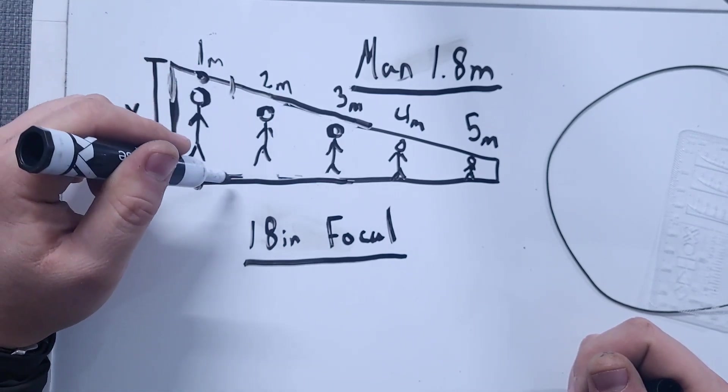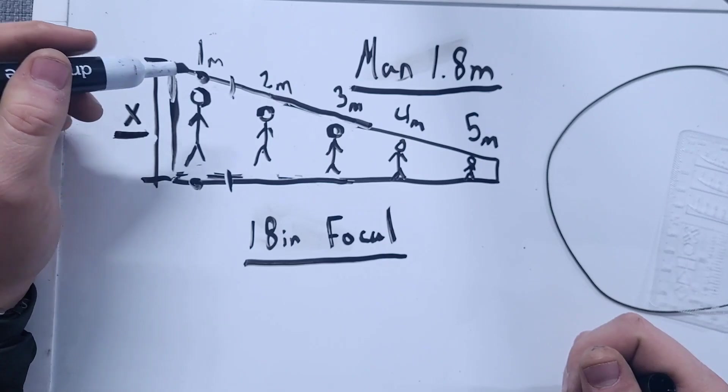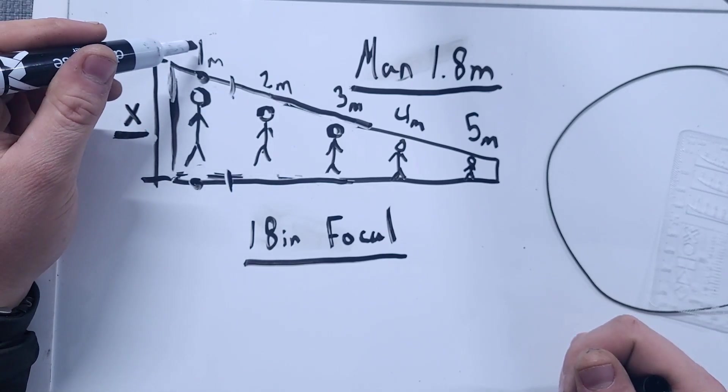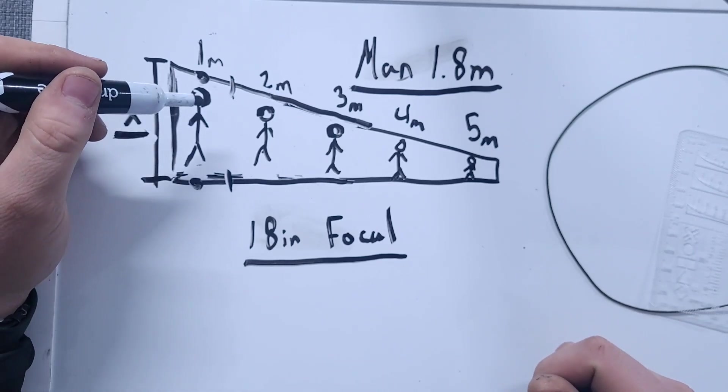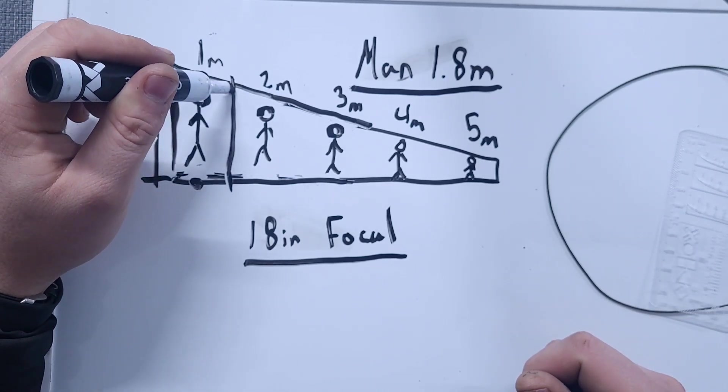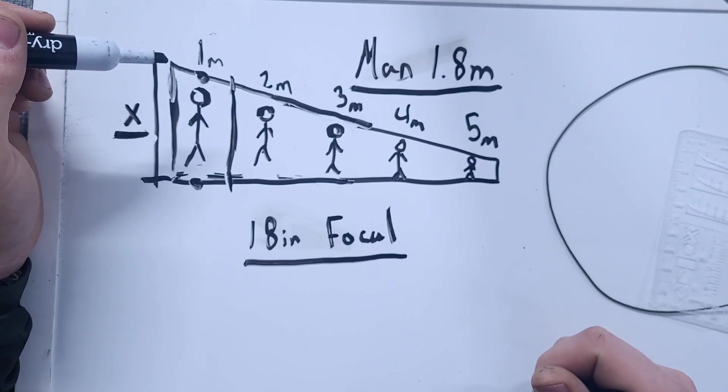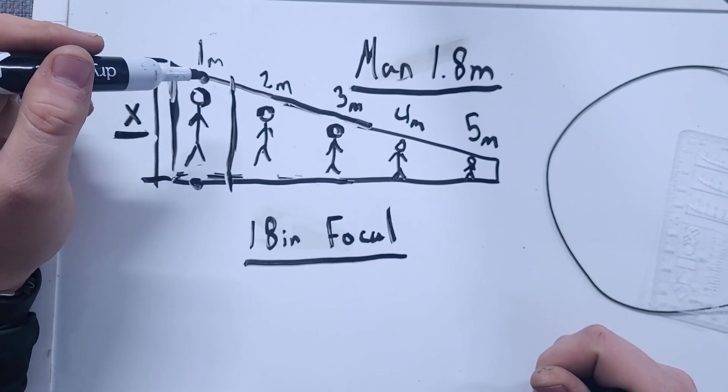Now, you might ask, what if it's in between here? Well, we know that the midpoint between 100 meters and 200 meters is 150 meters, right? So if the guy is this tall, I'm going to assume that it's probably 150 meters or very close.